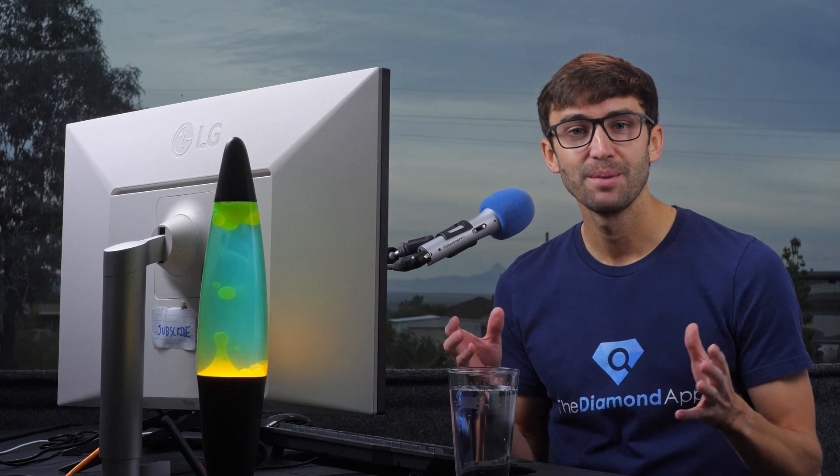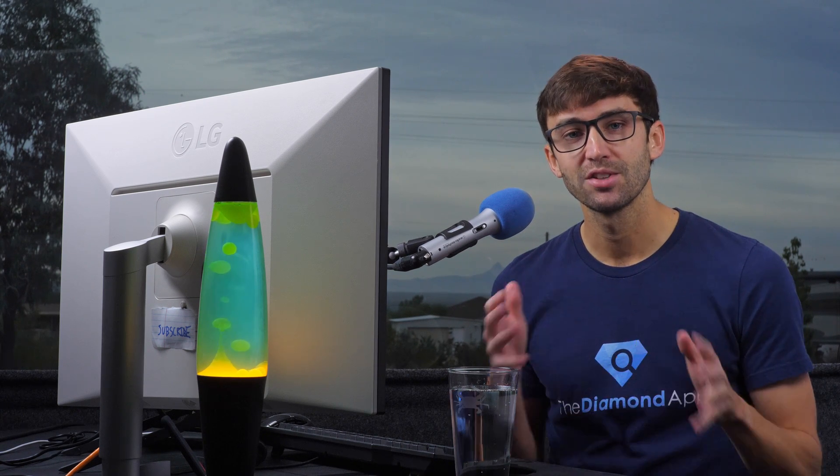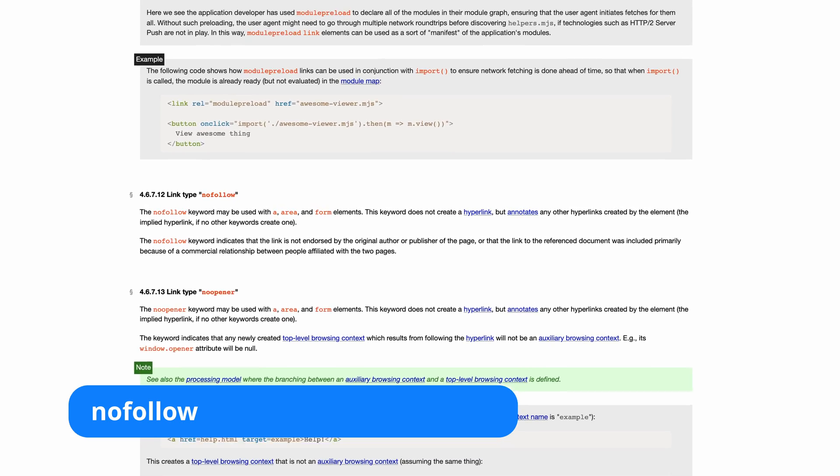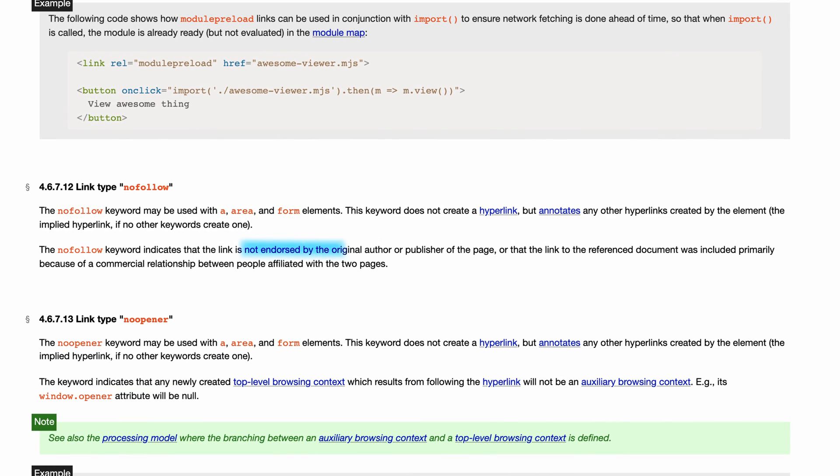These new link types rightfully cause some confusion, but my hope is that I can provide some clarity for you, so let's start out with nofollow. According to the official HTML standard, the nofollow keyword indicates that the link is not endorsed by the original author or publisher of the page, or that the link was included because of a commercial relationship between people affiliated with the two pages.